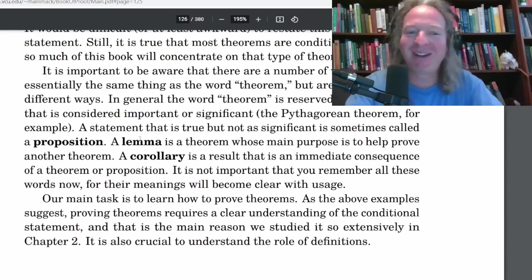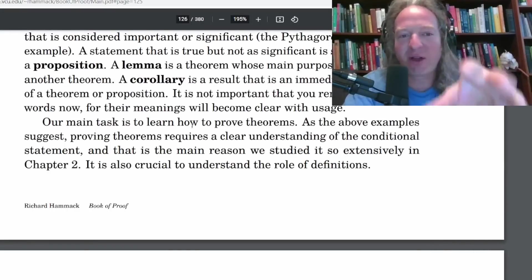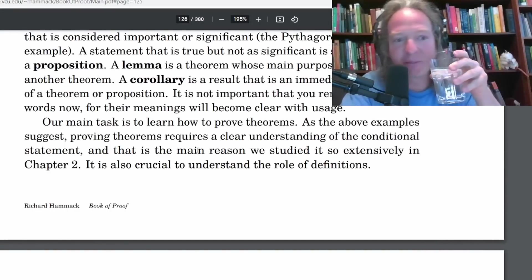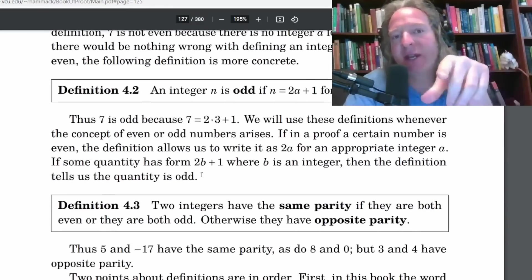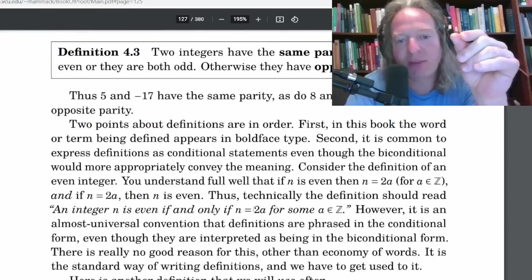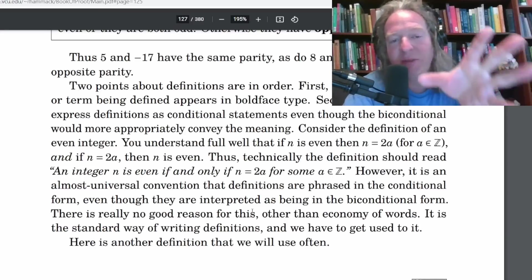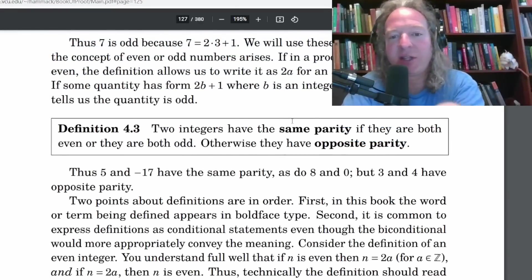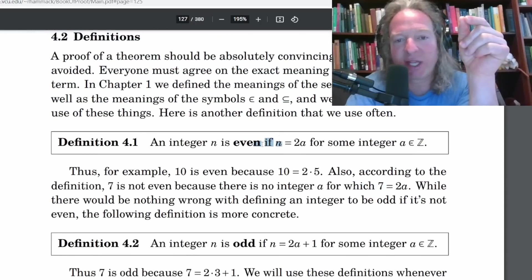A lemma is a theorem whose main purpose is to help to prove another theorem. And a corollary is a result. There's really some big corollaries in mathematics. It tells you here it's not important that you remember these but you probably will. The first time I learned this wasn't from this book. It was in an abstract algebra class. And I thought, oh, that's what proposition means. And I'm getting goosebumps. Just really great stuff.